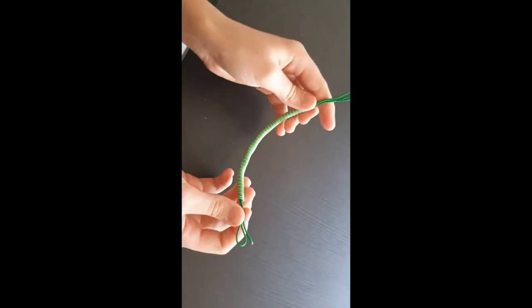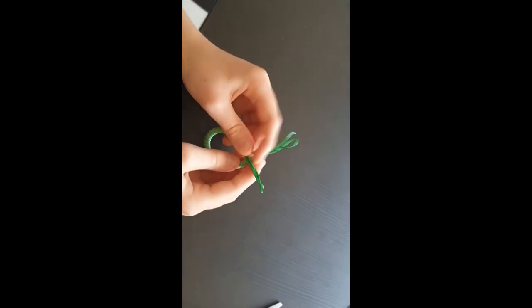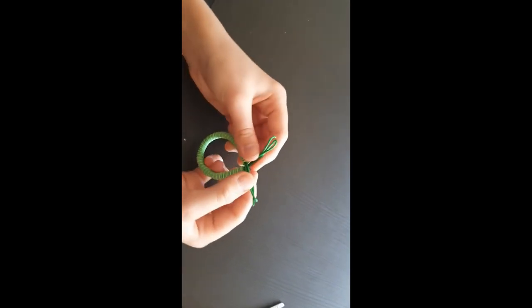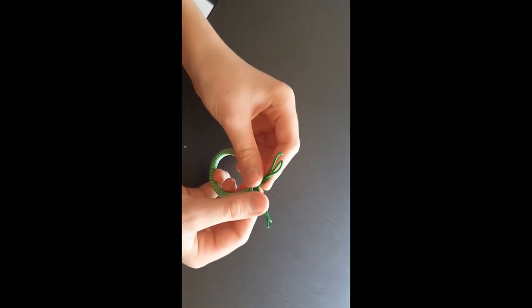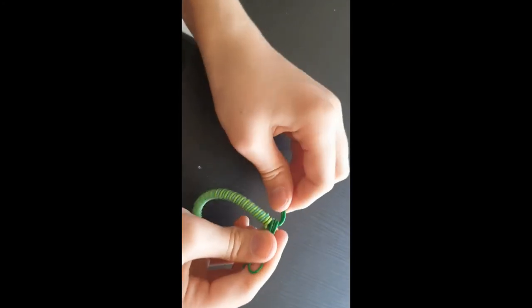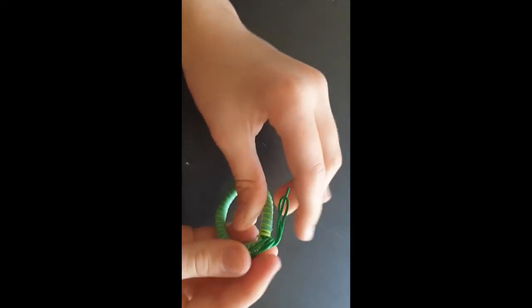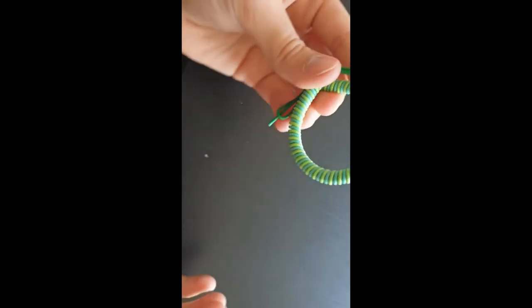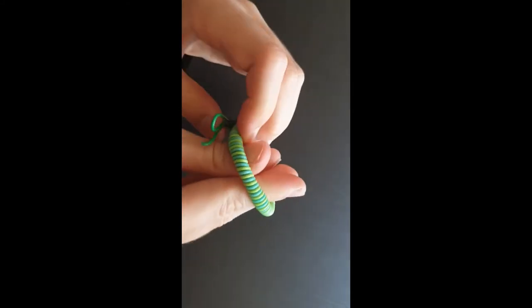And then all we're gonna do, you could do this while it's on the person's wrist or just on its own, you're gonna cross them over and then twist them back like that. So then you've got your very own twisties bracelet.